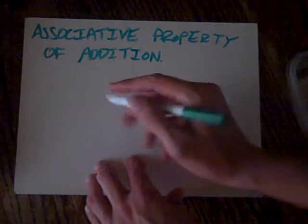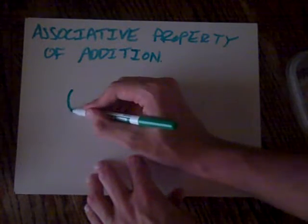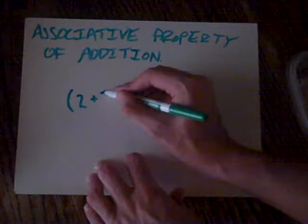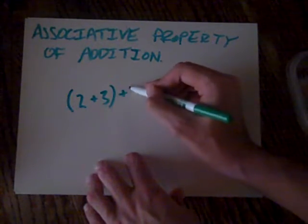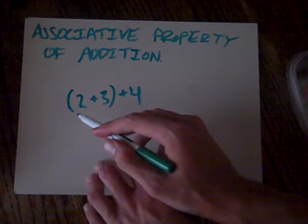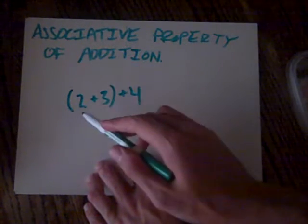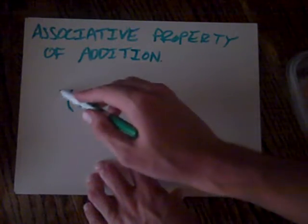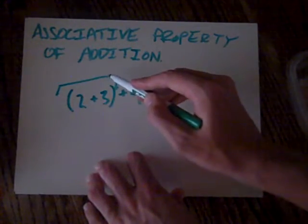So first of all, parentheses. They got parentheses (2+3)+4. Well that means that you do what's in the parentheses first, and then the result of that, what this equals, you add to that.